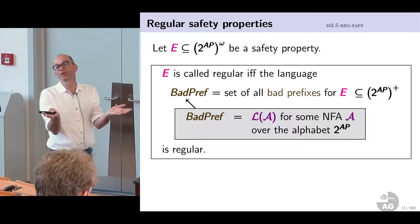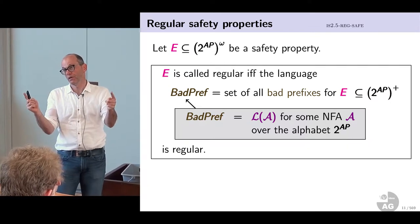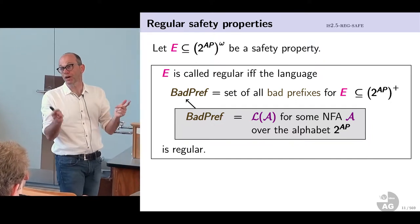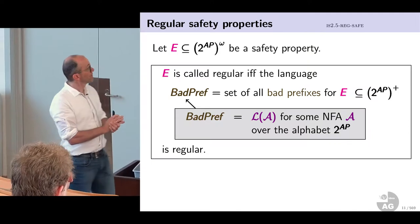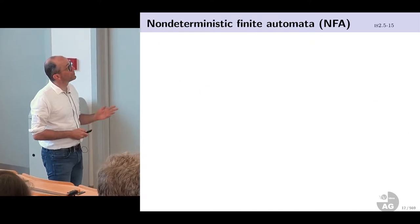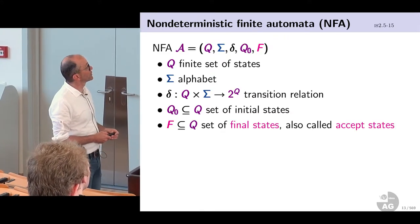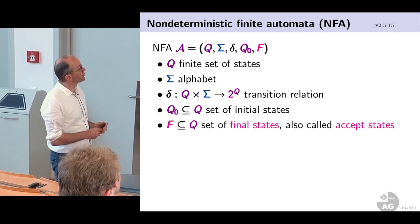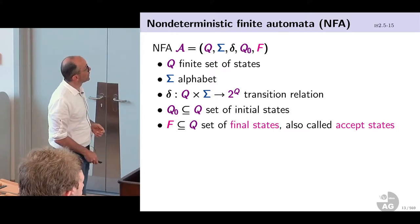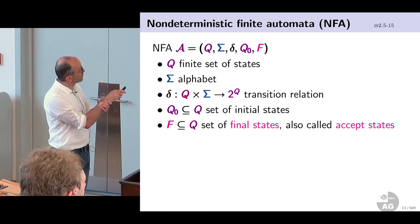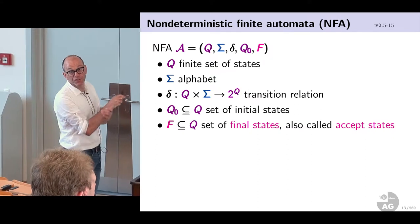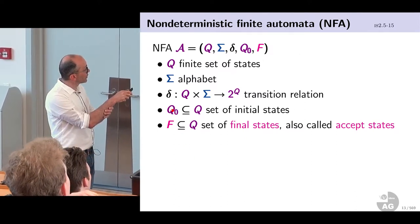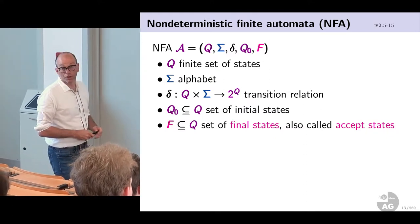The alphabet of the NFA needs to represent all bad prefixes. Bad prefixes are finite words where every symbol is a set of atomic propositions, so the symbols on transitions are sets of atomic propositions — i.e., the alphabet is 2^AP. A brief recap to introduce my notation: a finite state automaton is a quintuple consisting of a finite set of states, an alphabet, a transition relation (taking current state and next input symbol to possible next states as a power set, making it non-deterministic), a set of initial states Q0, and a set of final or accept states.